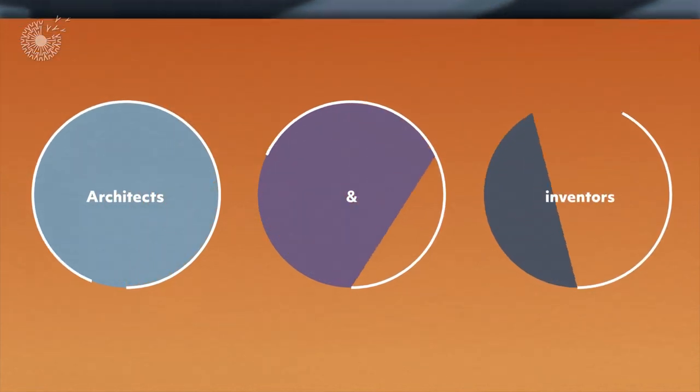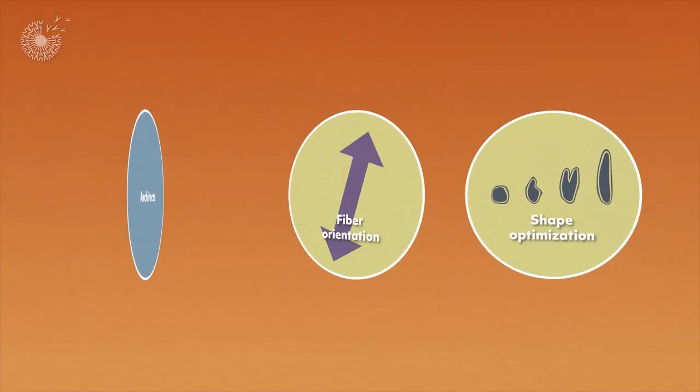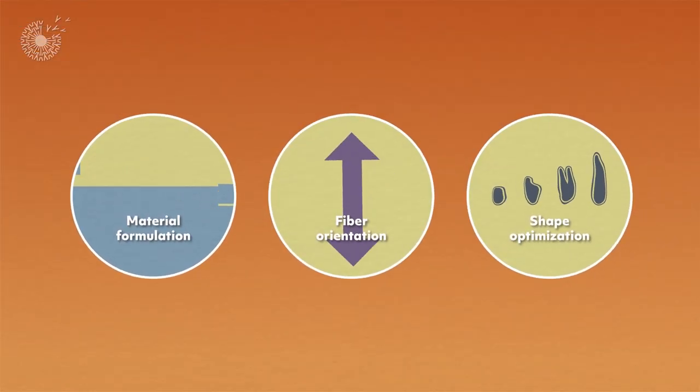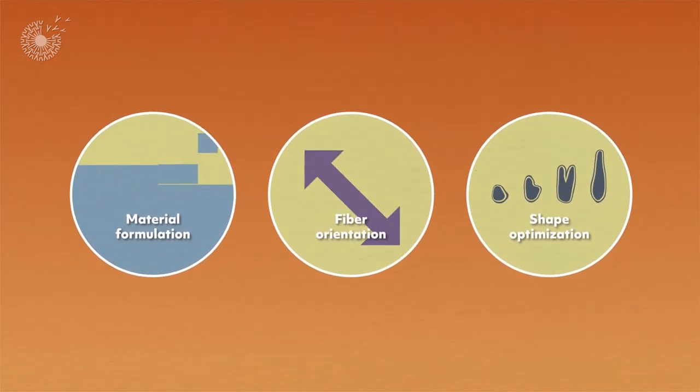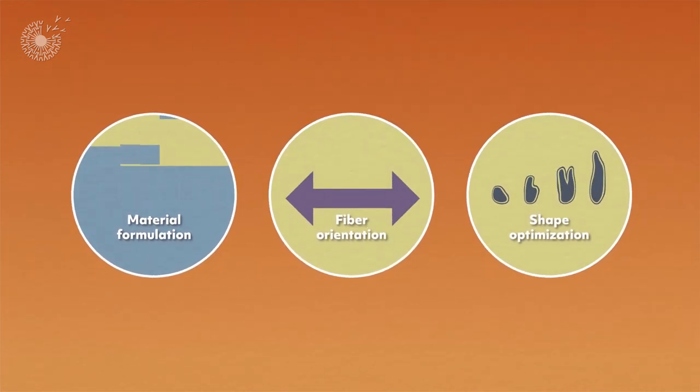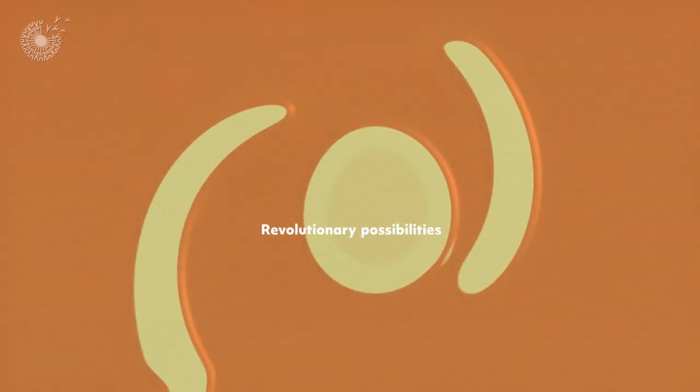Now, architects and inventors at a company called Strong by Form have devised a manufacturing process that mimics the way trees themselves shape their materials for structural performance and opens up revolutionary possibilities for the forms wood construction can take.